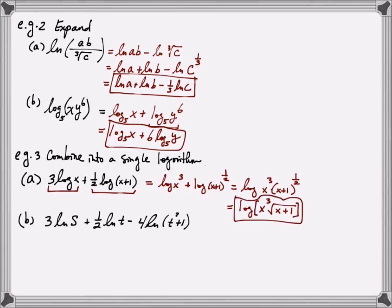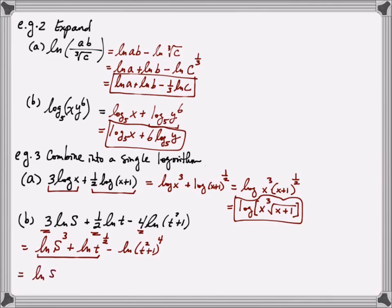This is assuming a common log of base 10. Looking at another example with three terms each having a coefficient: apply rule number 3 first to get natural log of s cubed plus natural log of t to the one-half minus natural log of the quantity t squared plus 1 raised to the fourth power. Combining two at a time, use rule number 1 on the first two terms to get natural log of s cubed times t to the one-half. The remaining term is subtracted, so apply rule number 2 to combine into a fraction: natural log of s cubed times the square root of t divided by the quantity t squared plus 1 raised to the fourth power.